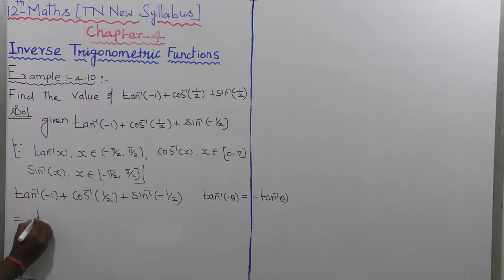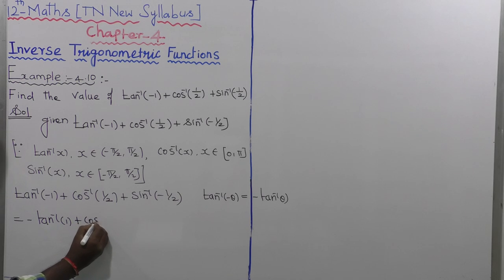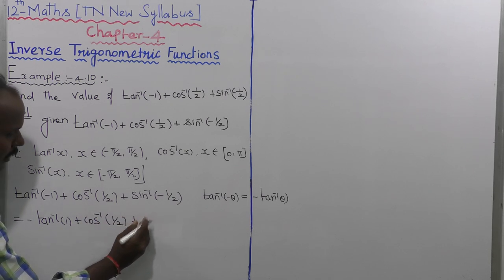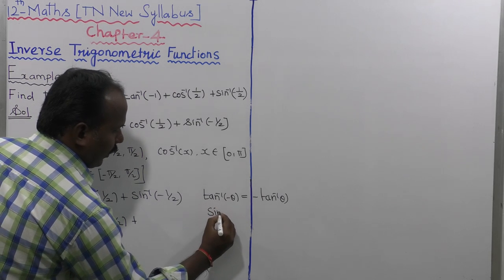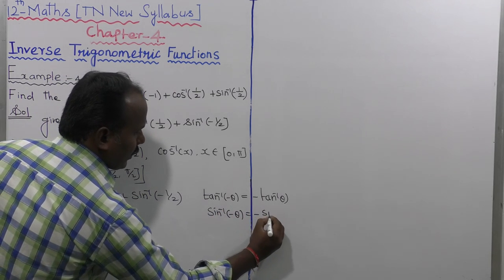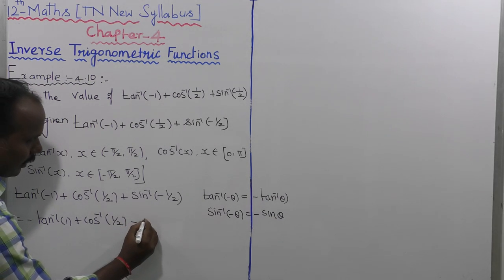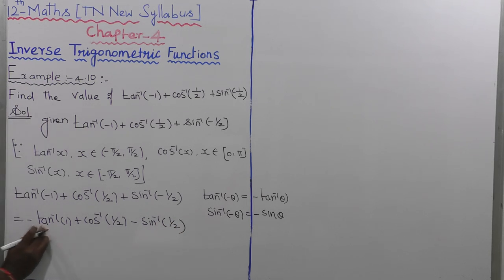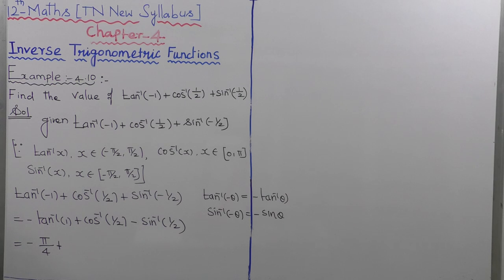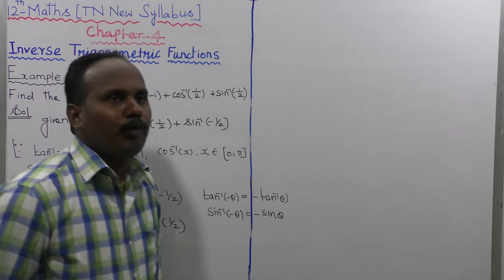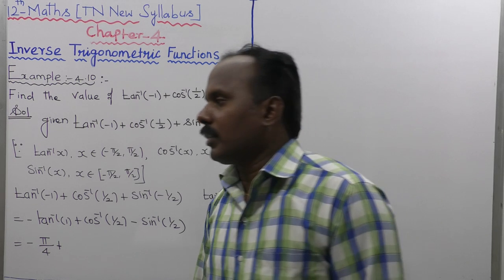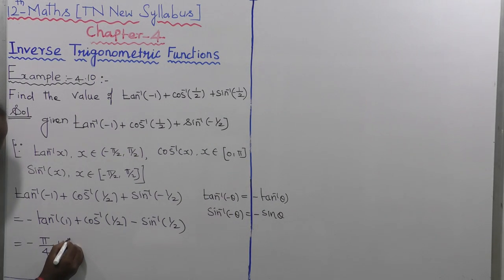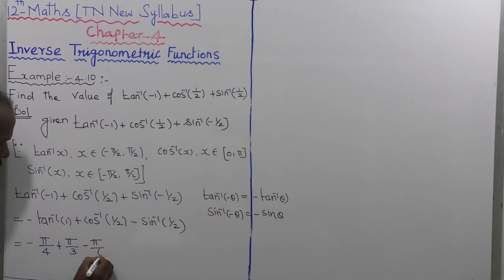So this becomes minus tan inverse of 1 plus cos inverse of 1 by 2, and applying sin inverse of minus theta equals minus sin inverse of theta, we get minus sin inverse of 1 by 2. That equals minus π/4 — since tan inverse of 1 equals π/4. Next, cos inverse of 1 by 2: 1 by 2 means 60 degrees, which is π/3. Third, minus 1 by 2 gives minus π/6.